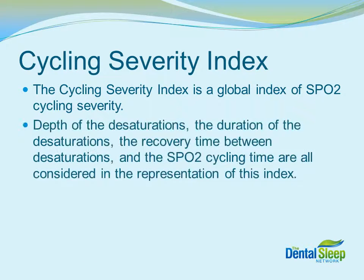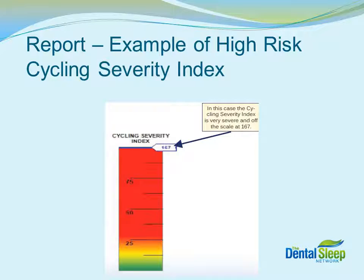In calculating the cycling severity index, you'll look at several factors, including the depth of the desaturation. For example, if a desaturation goes from 96 to 92%, that still qualifies as a desat because it's 4%. But if a desaturation lasts for a minute and goes from 96 to 80%, that would be considered a very deep desaturation and a bigger problem. Both score as one event, but the one that goes deeper is a bigger problem, and that's calculated in the severity index. Also, the duration between desaturations and the recovery time is important. A patient who desaturates and then doesn't have another one for an extended period is of less concern than a patient desatting regularly with just seconds in between.